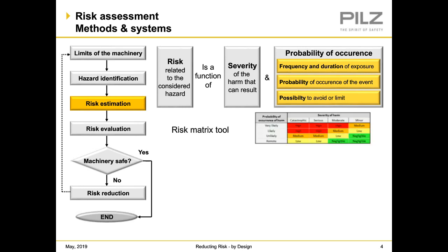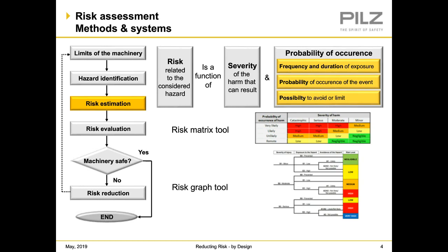There are different types of tools that can help you estimate these things. You can use a risk matrix tool that has probability of occurrence and severity of harm, or graphs that help estimate risks, or numerical tools such as a hazard rating number system. Numerous standards can also support this — for example, ISO 14121-2.